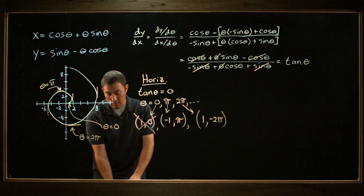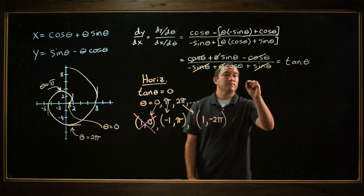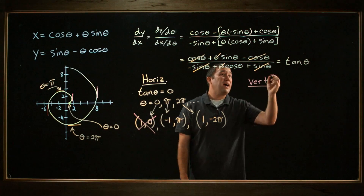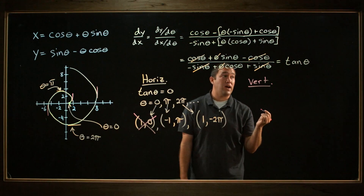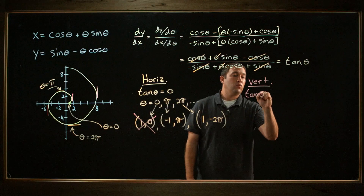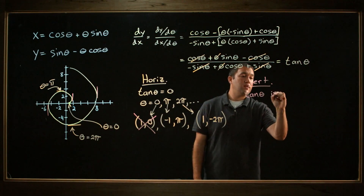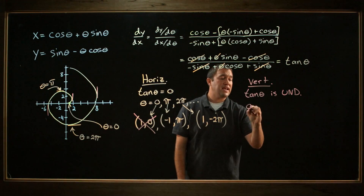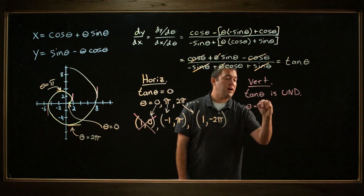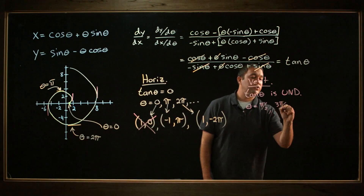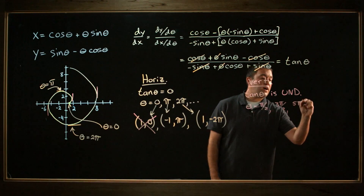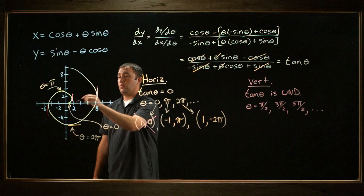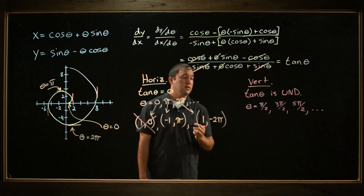Now let's find our points of vertical tangency. I know I'm going to have a vertical tangent line if my derivative dy over dx is undefined, so I want to find where tangent theta is undefined. Tangent theta has asymptotes at pi over 2, at 3 pi over 2, at 5 pi over 2, and so on. But in my picture I only have 3, so maybe those are the only 3 I need. Let's check.